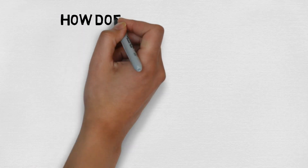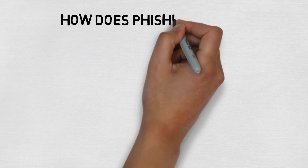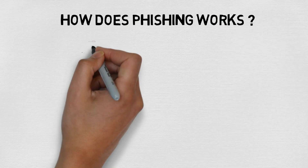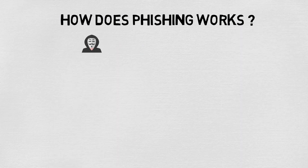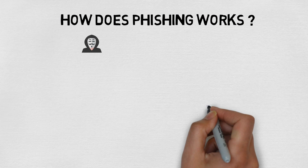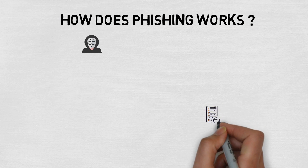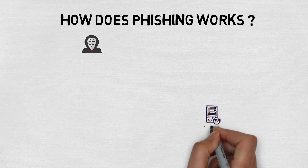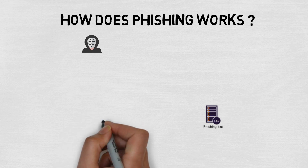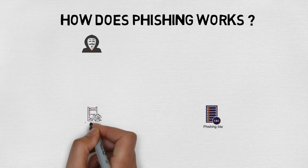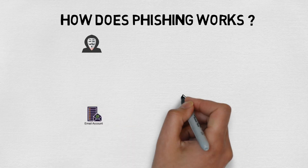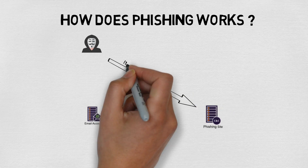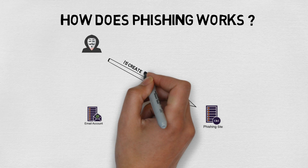Now let's discuss how phishing works. Phishing is a type of social engineering technique which is used to fake out users and steal their identity. First, the attacker buys a compromised server or uses a hosting service and uploads the phishing kit to the server. The attacker then creates a phishing website which looks like an original.